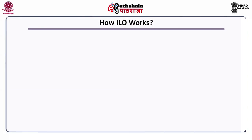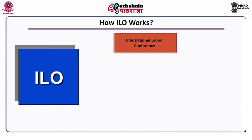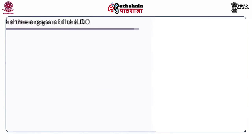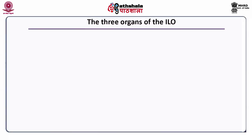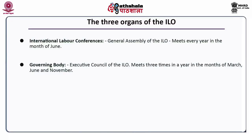ILO comprises of three bodies: the International Labour Conference, the Governing Body and the International Labour Office. These three are the major organs of the ILO. The International Labour Conference is the General Assembly of the ILO, which meets every year in the month of June. The Governing Body is the Executive Council of the ILO, which meets three times a year in the months of March, June and November. The third is the International Labour Office, which is a permanent secretariat.